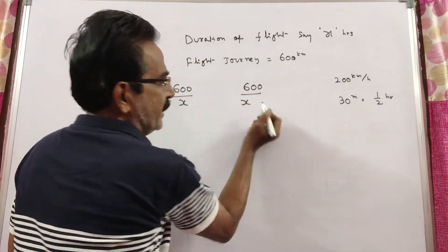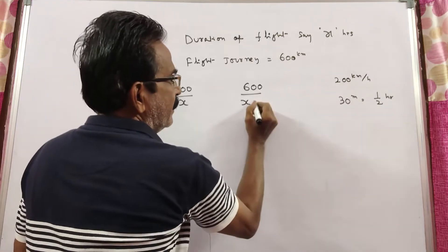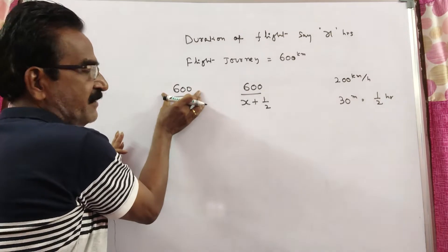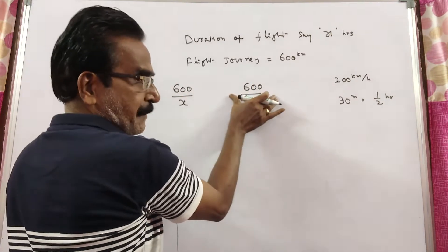That means the original time of X hours, plus half an hour more. So this is the original speed, this is the present speed.